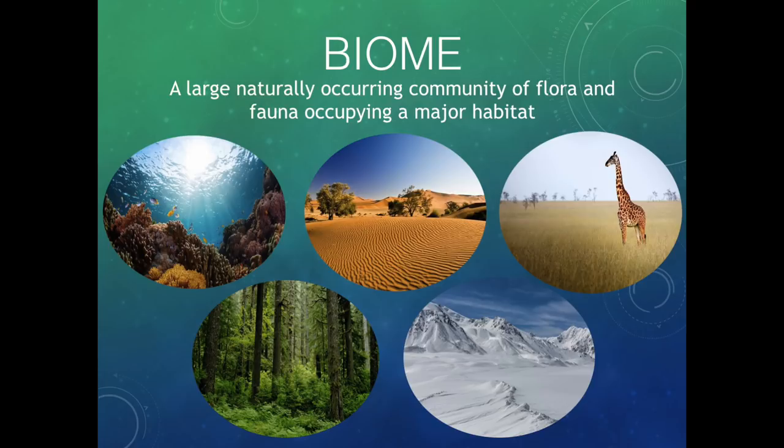So let's first talk about biomes. A biome is a really strange word, but by definition it is just a large naturally occurring community of flora and fauna — so plants and animals — occupying a major habitat. So oceans, the desert, the forest, or the arctic tundra: those are biomes. It's a very broad umbrella term.